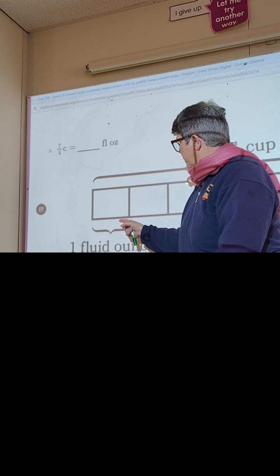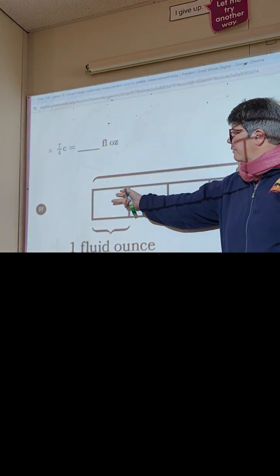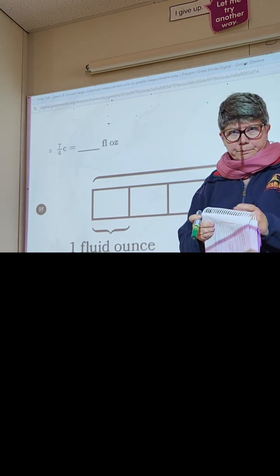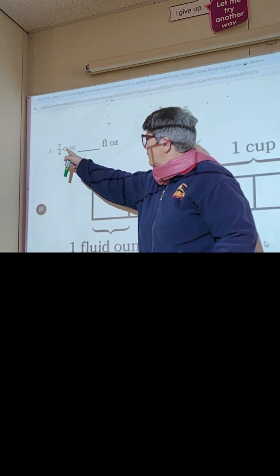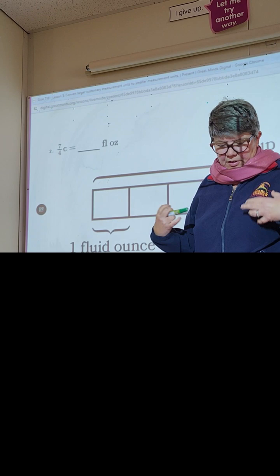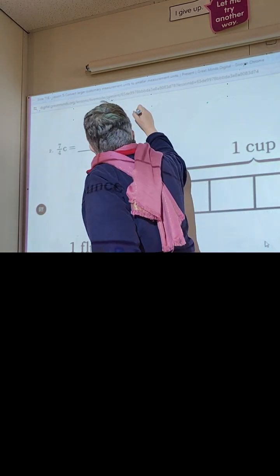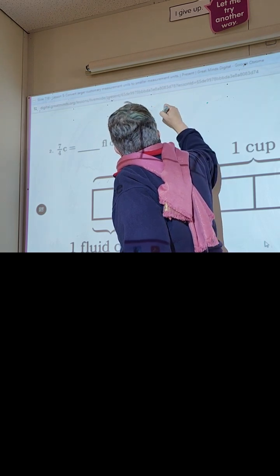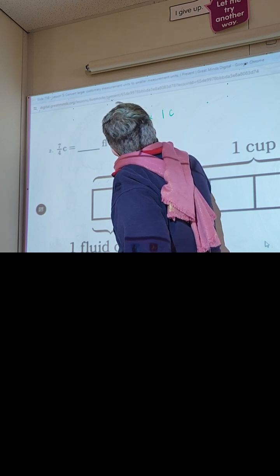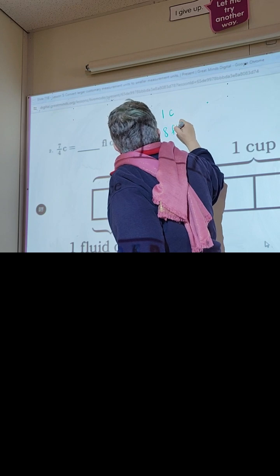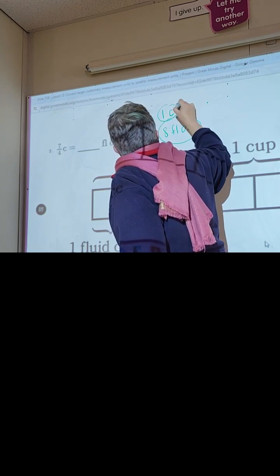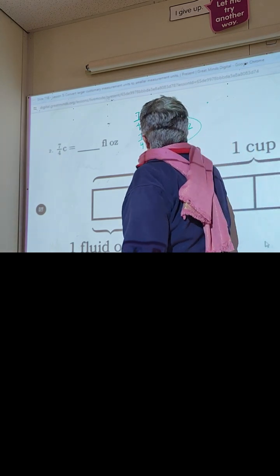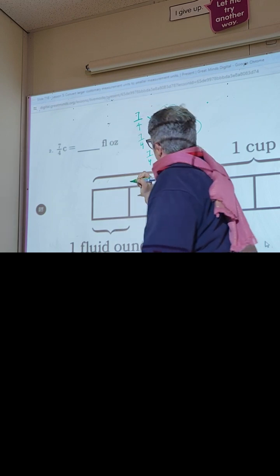This is a liquid, a fluid. We have our giant tape diagram: one cup is broken into eight fluid ounces. What's a little different about this problem, besides the fluid ounces, is that we have seven-fourths cups — so our answer is going to be more than one. We're going to use our substitution factors: seven-fourths cup times one cup, and seven-fourths times eight fluid ounces. These two are equal to each other, and we substitute them — that's how we change it to ounces.